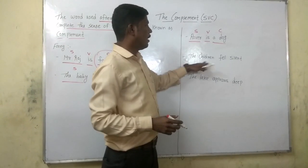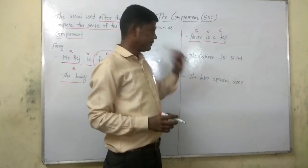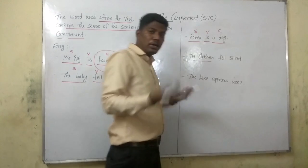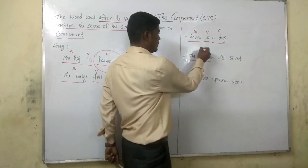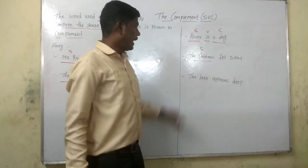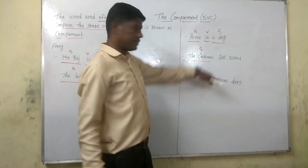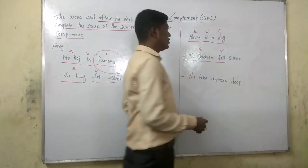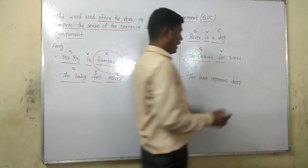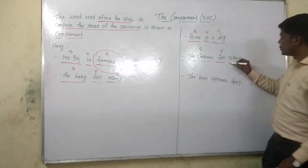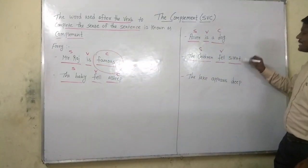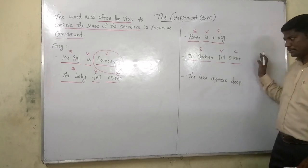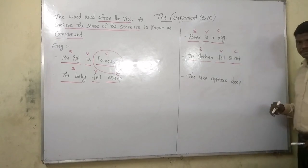Now see: 'The children felt silent.' The main part of the sentence, or the doer of the action, is 'the children' — that is the subject. 'Felt' is the verb, the action word. And 'silent' is the word used to complete the sense of the sentence — that's why 'silent' is the complement. Understood?